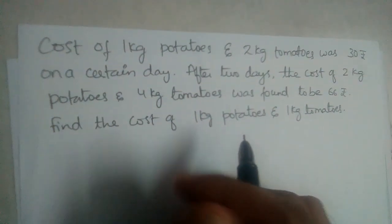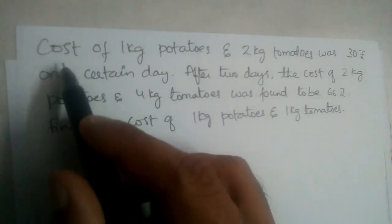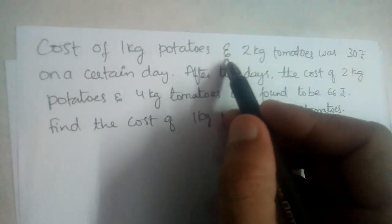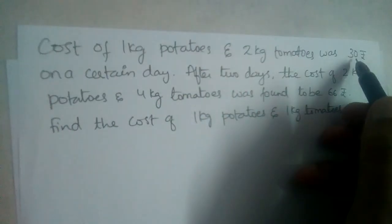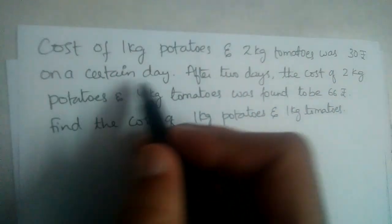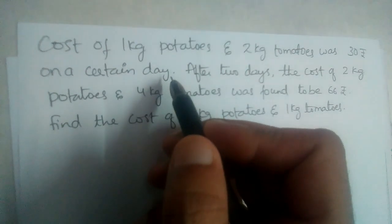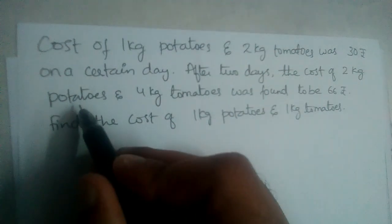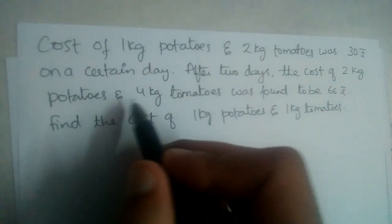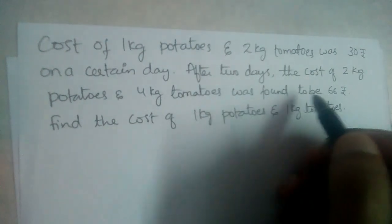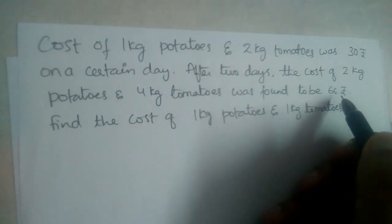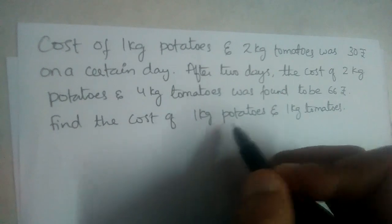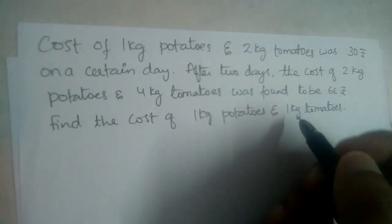Let us solve this problem. The cost of 1 kg potatoes and 2 kg tomatoes was 30 rupees on a certain day. After 2 days, the cost of 2 kg potatoes and 4 kg tomatoes was found to be 66 rupees. Find the cost of 1 kg potatoes and 1 kg tomatoes.